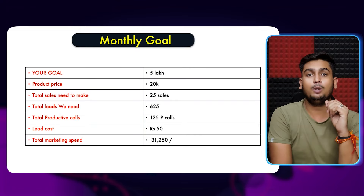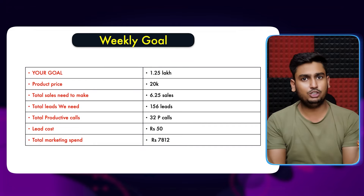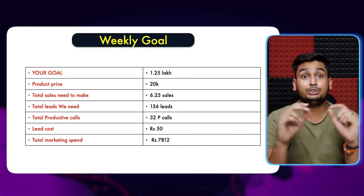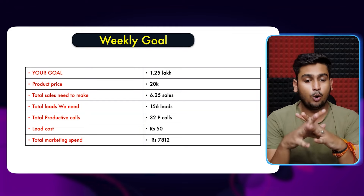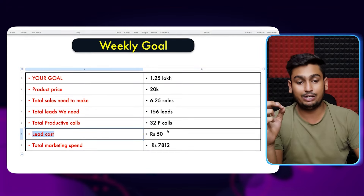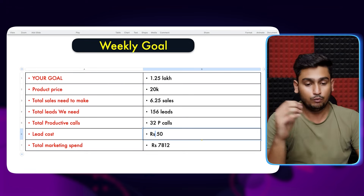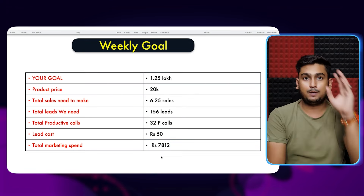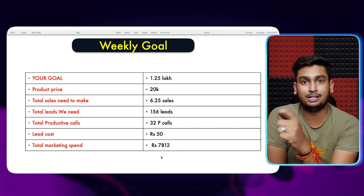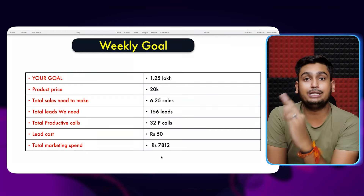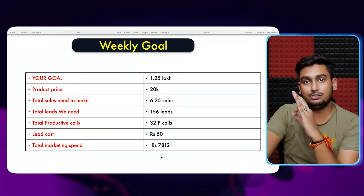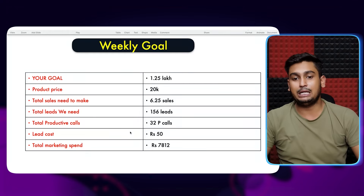Now let's break this into weekly goals by dividing by 4. Our weekly goal is approximately $12,500. Product price is $20,000. We need 6 sales per week. We need around 156 leads and 32 productive calls per week. Lead cost is 50 rupees, and our weekly marketing spend is around 7,800 rupees. Your focus should not be on the revenue number — it should be on spending the right amount on ads and completing those 32 productive calls. That's it.